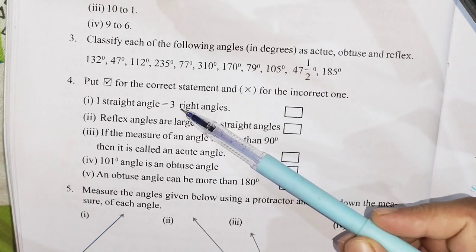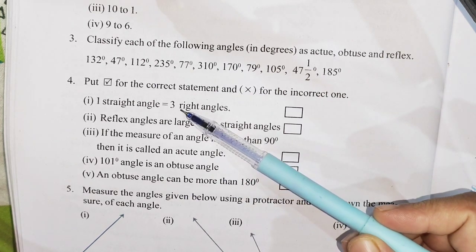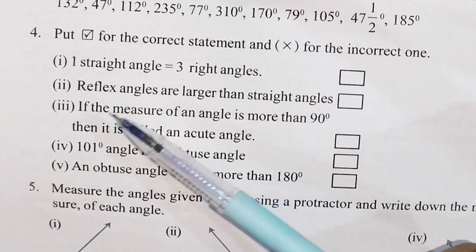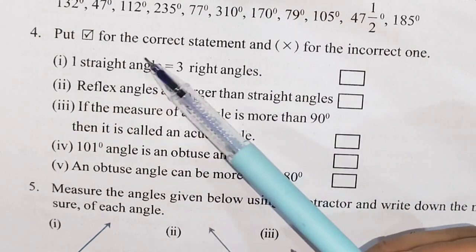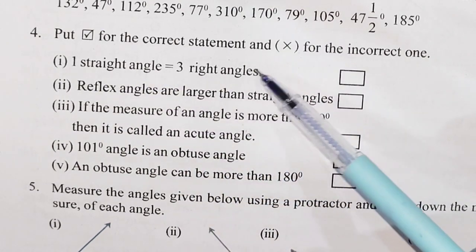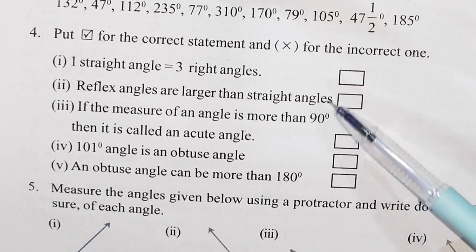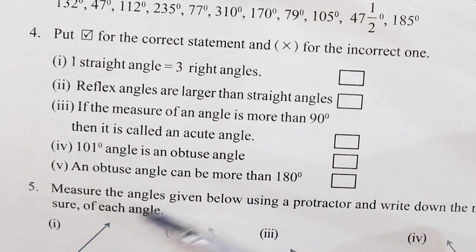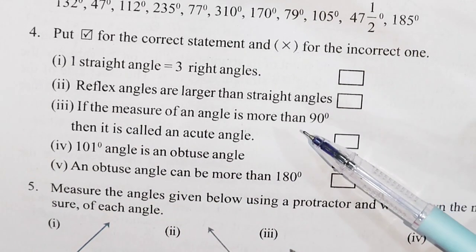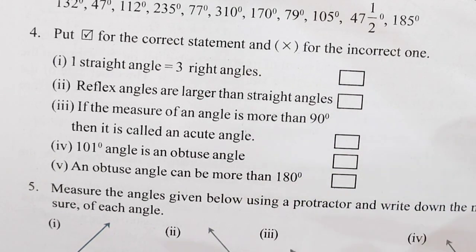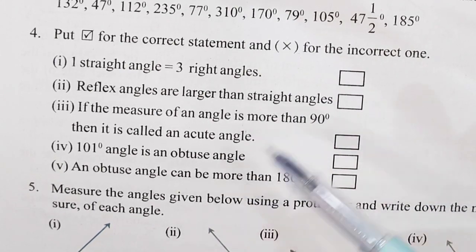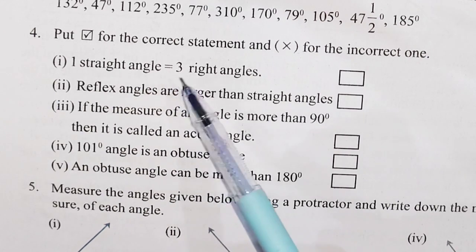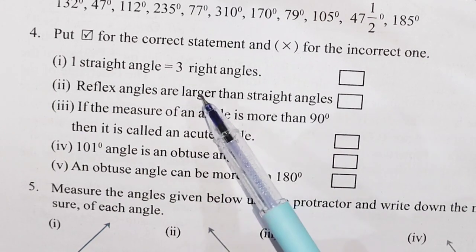First, question number 4. Put a right sign for the correct statement and a wrong sign for the incorrect one. Question number 1: Straight angle is equal to 3 right angles.